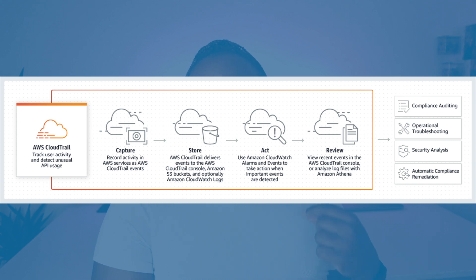AWS CloudTrail allows you to see API calls that were made in your account and gives you log information about them — things like the person who made the API call, when they made it, and the IP address they made it from. Essentially, when you think CloudWatch, think about monitoring the health of your services; when you think CloudTrail, think about logging API calls.